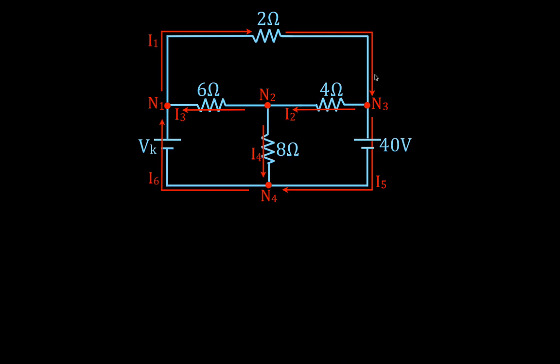I just want to point out that the direction I chose for each current is completely arbitrary — you can choose any direction that you like. It'll all come out in the math. If we get a positive answer, we chose the correct direction. If we get a negative answer, the current is actually flowing in the opposite direction.